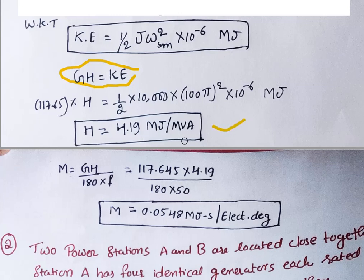Once H is found, M is easy to calculate. M = G·H / (180·f) = 117.645 × 4.19 / (180 × 50) = 0.0548 megajoules per second per electrical degree. If you want M in electrical radians, replace 180 with π in the denominator.